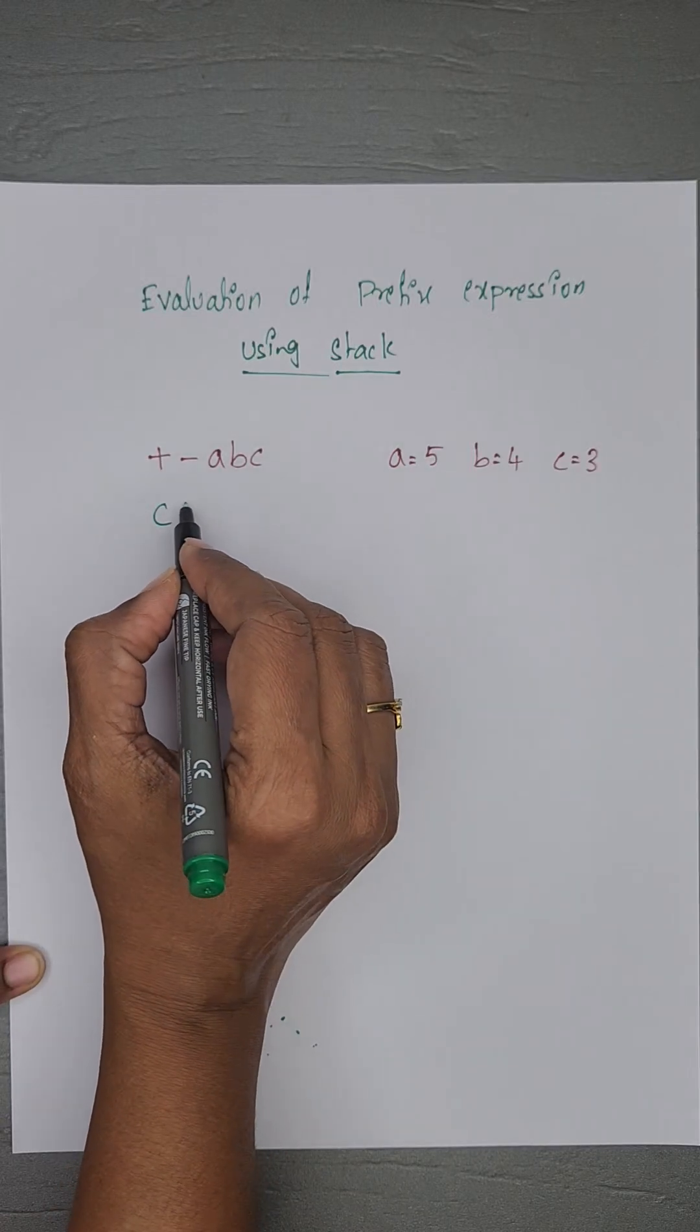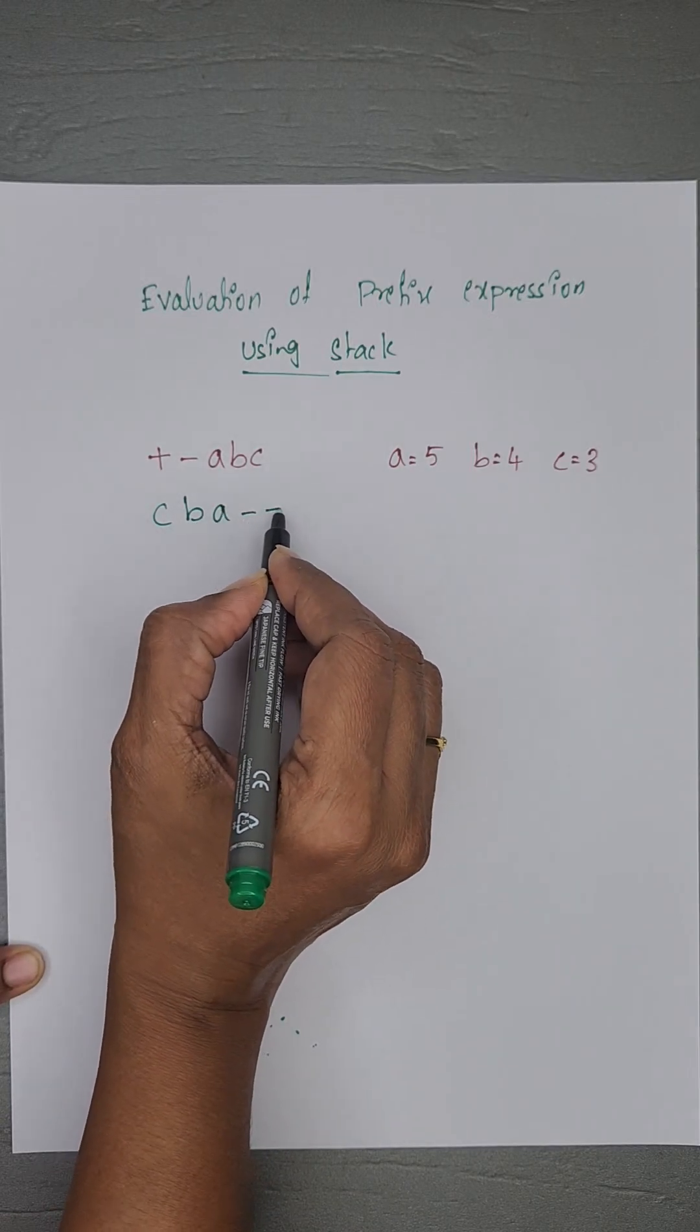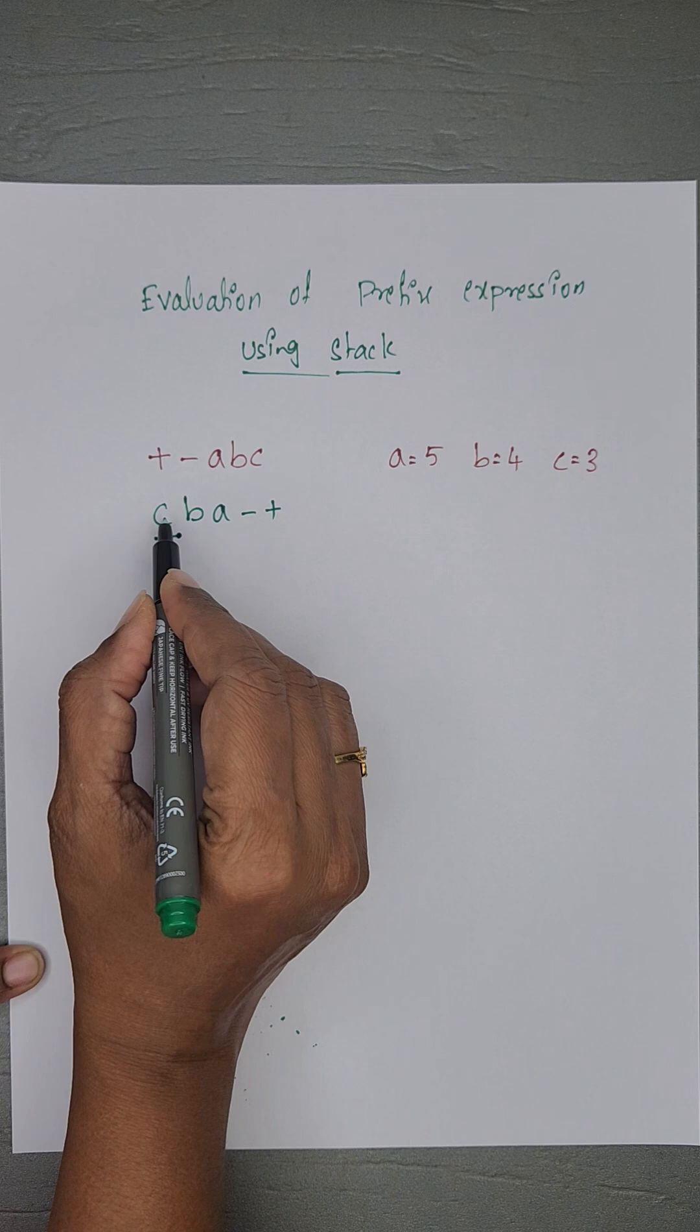First, reverse the given prefix expression: cba minus plus. Read one character at a time.